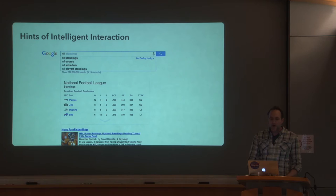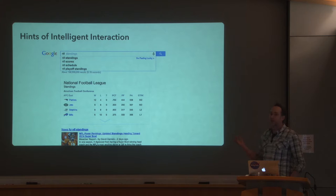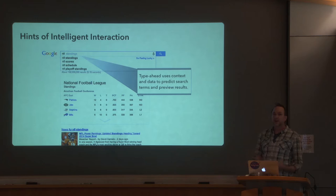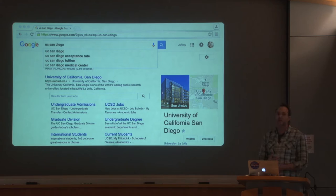Moving on to a slightly more complex example, and maybe a useful microcosm of some of the things that I care about, would be autocomplete. Here I'm writing a query to Google, I write in NFL, and not only does it immediately provide me results including structured data and search results, it suggests possible refinements or extensions of my query. It uses the context of the interaction — what I've typed — as well as data on past activity to make predictions. If I search for San Diego, I might be able to jump a couple steps in my work if I care about acceptance rate, tuition, or medical center.